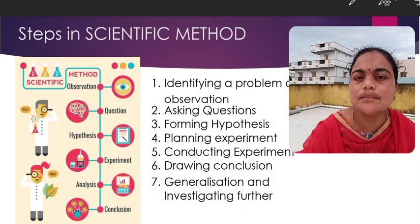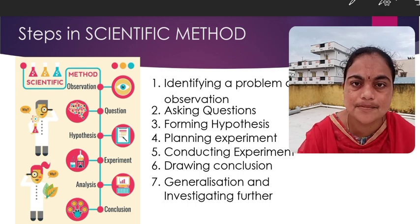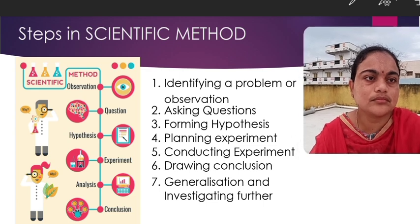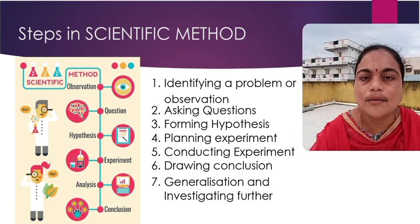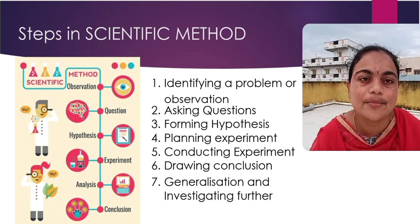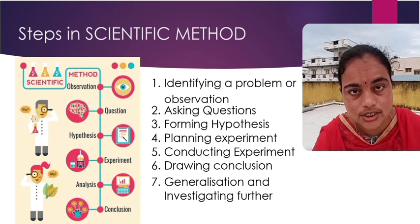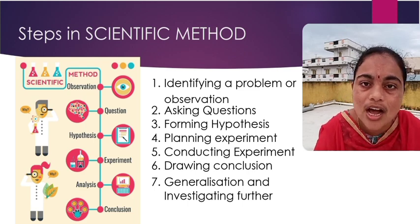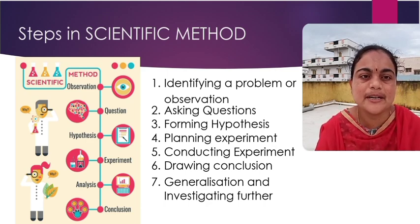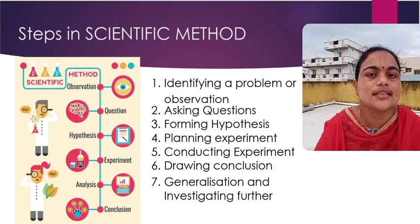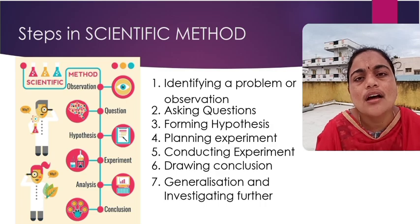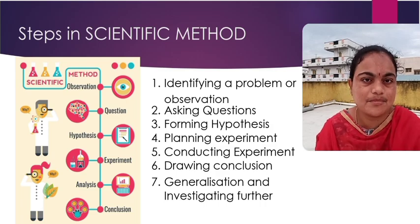The scientific method has seven important steps. First step is identifying a problem through observation. Second step is asking questions. Then forming a hypothesis, planning an experiment and conducting that experiment, drawing a conclusion, generalizing it, and investigating it further. We will discuss each step one by one.